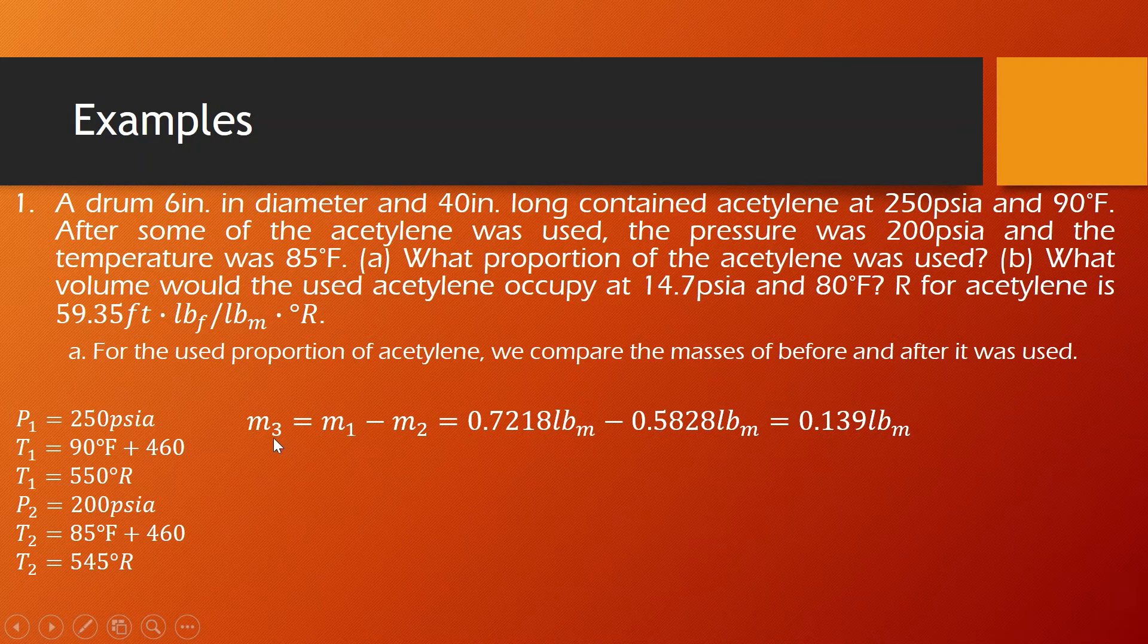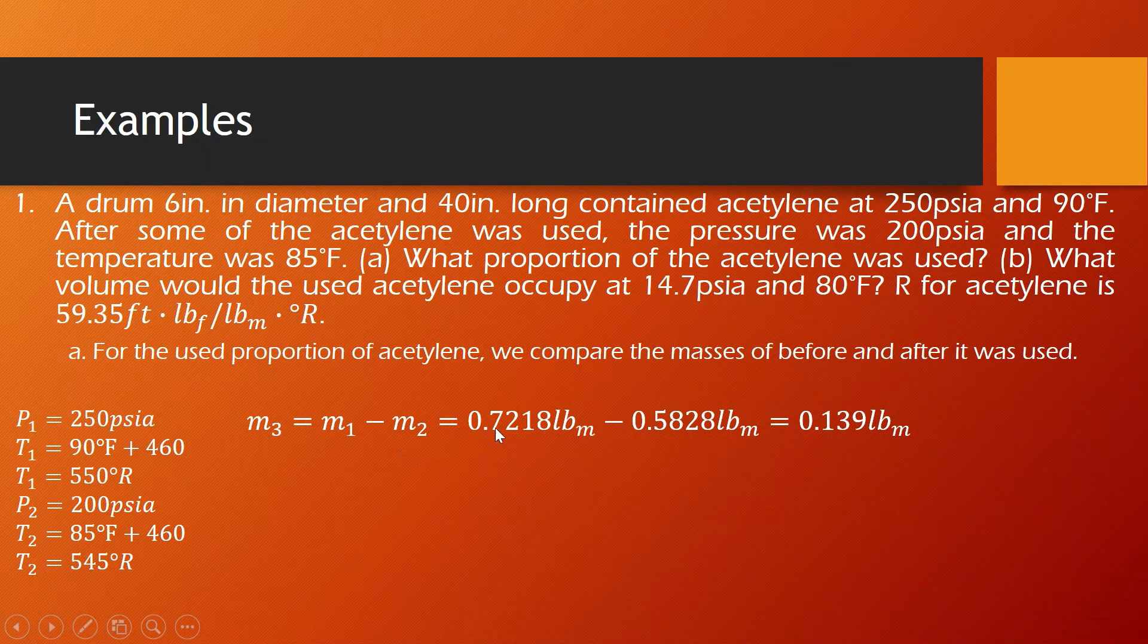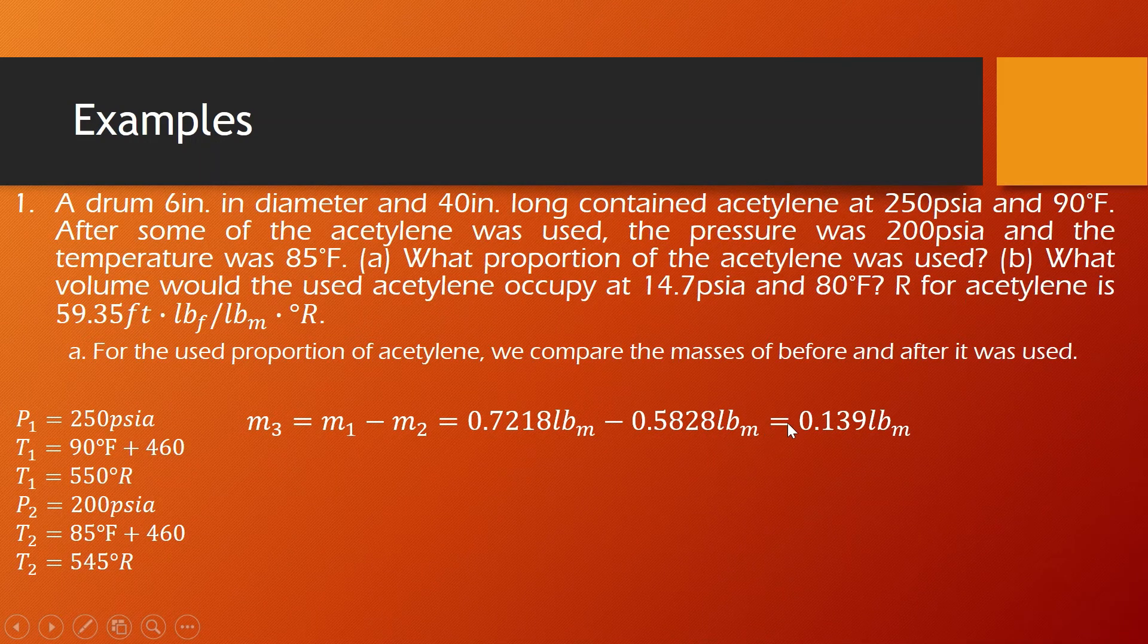And so in computation for the volume of the used acetylene, the mass of the used acetylene is equal to the original mass minus the remaining mass. So that is 0.7218 pound mass minus 0.5828 pound mass. That is equal to 0.139 pound mass, the used acetylene.